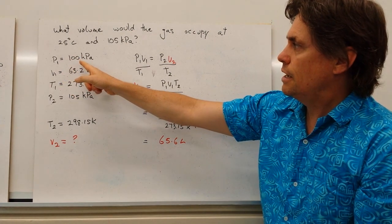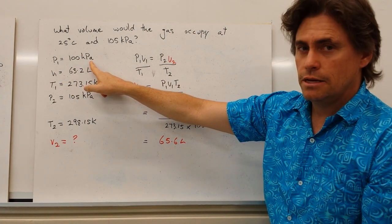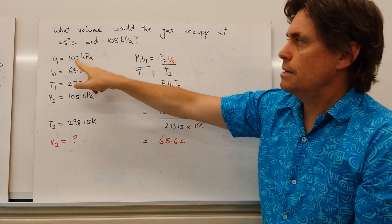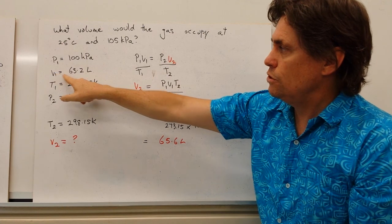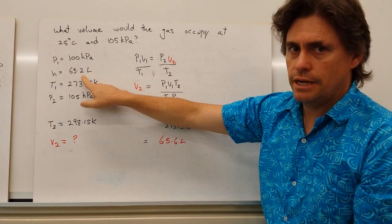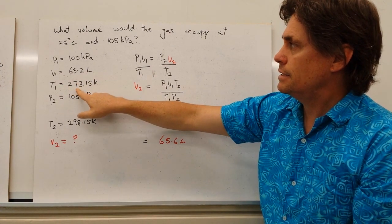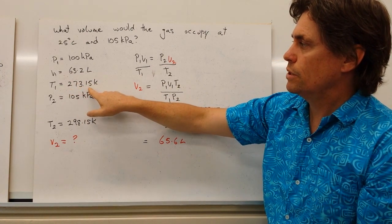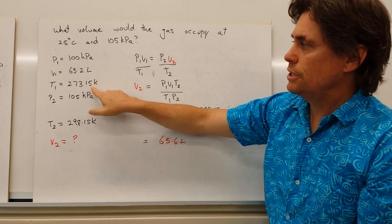So the first thing I do is write down what we know. So the first pressure at STP is 100 kilopascals. Depending on what you use for STP, that might be 101.325. Our volume from the previous answer was 63.2. That's our initial volume conditions. Our temperature at STP is 273.15, 0 degrees C. We've always got to have our temperature in Kelvin.